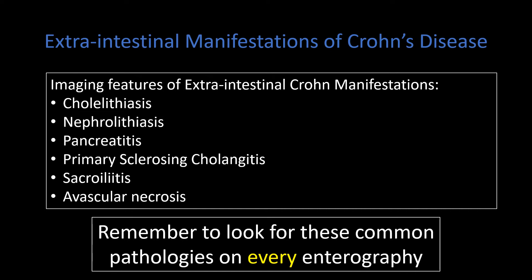Sacroiliitis and avascular necrosis are two extra-intestinal manifestations I see very commonly on both MRE and CTE, and it is essential that you look for them in every patient. Sacroiliitis is an active inflammation that could benefit from medical therapy, and avascular necrosis is often a consequence of high-dose steroid use in patients with Crohn disease.